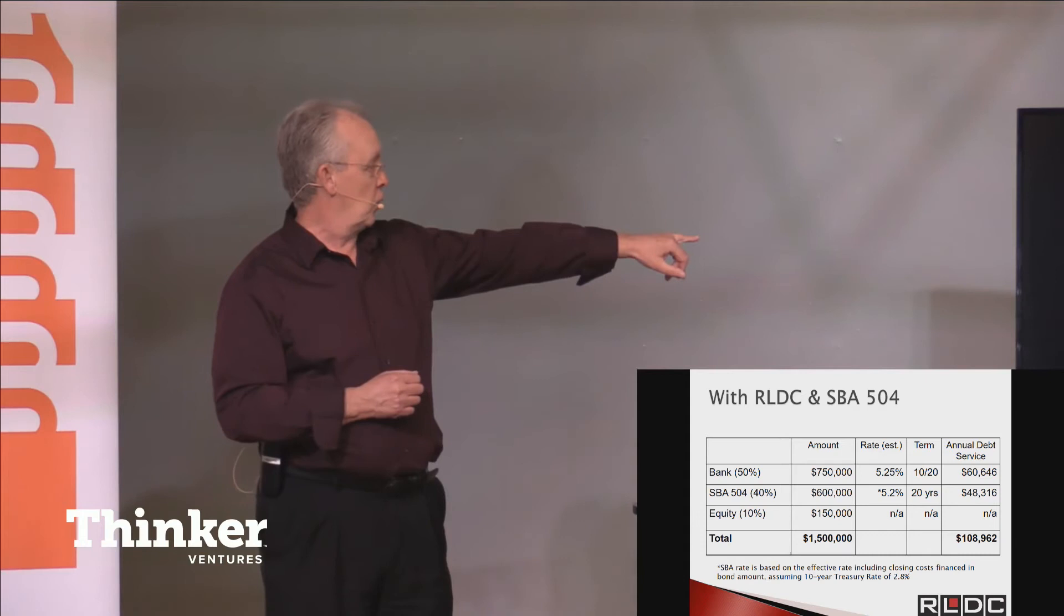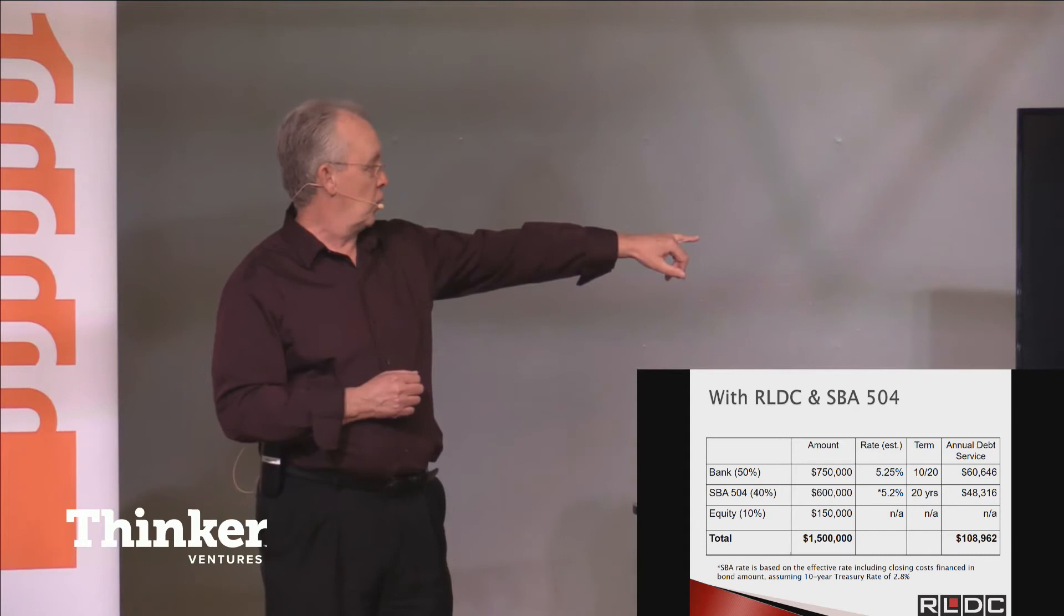So now the equity is only $150,000. The annual debt service is $108,000. So with our involvement, we've reduced the equity required by $200,000 and we've reduced the debt service by $35,000.